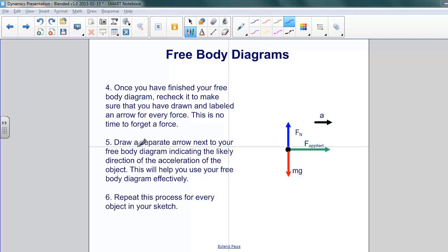Next, draw a separate arrow next to your free body diagram to indicate the likely direction of the acceleration of your object. This will help you use your free body diagram effectively when you're trying to work through your equations involving acceleration and force.